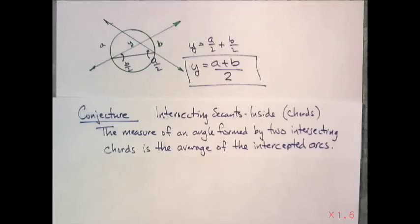The intersecting secants, if they intersect inside or otherwise known as chords: the measure of an angle formed by intersecting chords is the average of the intercepted arcs. Now you have all three iterations: a tangent with a secant, two secants that intersect outside the circle, two secants that intersect inside the circle.